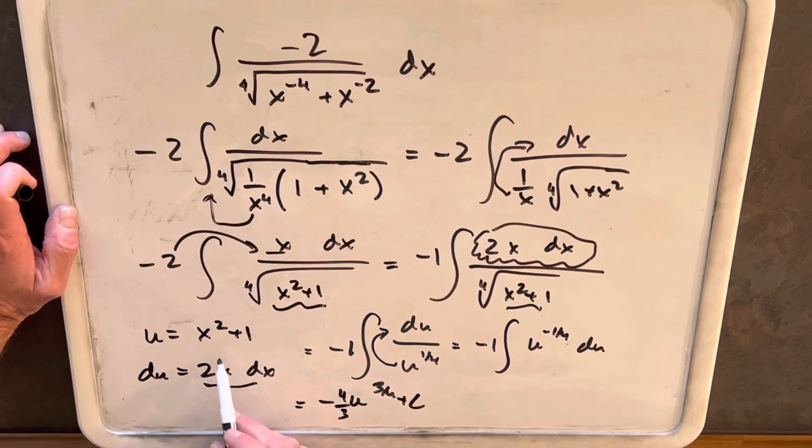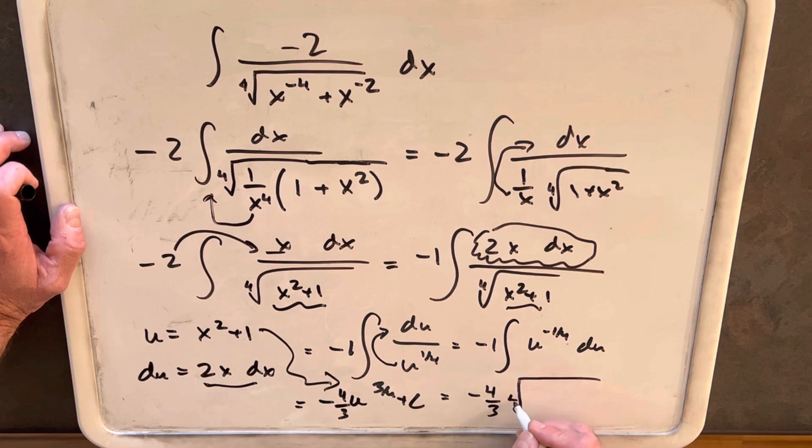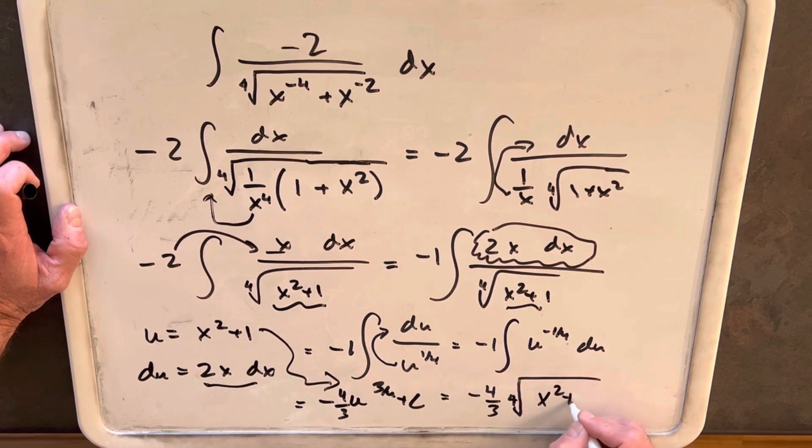Then we need to back substitute. So for our final answer, we're going to have minus 4/3. I'm going to try to maintain the fourth root to make it look like the original problem. So we'll have our fourth root, our u is x squared plus 1, but we don't want to forget to cube this, plus c.